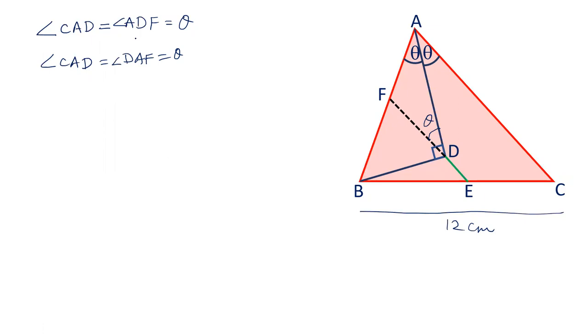From these two equations we can say that angle ADF equals angle DAF. These two angles are equal, and therefore two lines AF and DF are equal. This becomes an isosceles triangle.